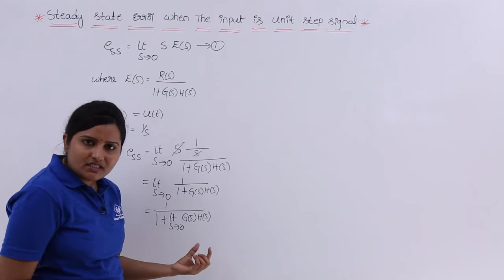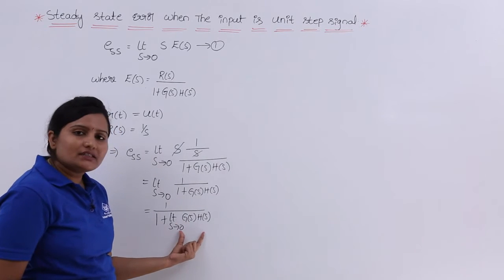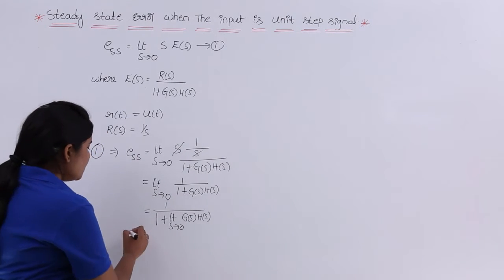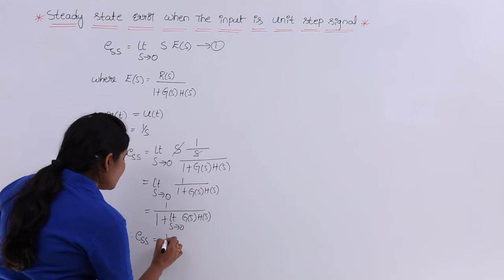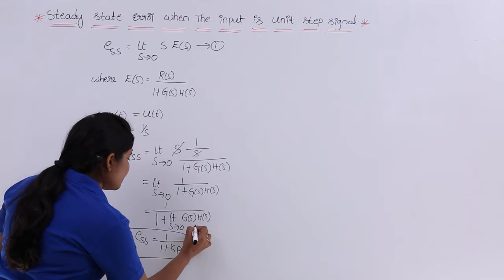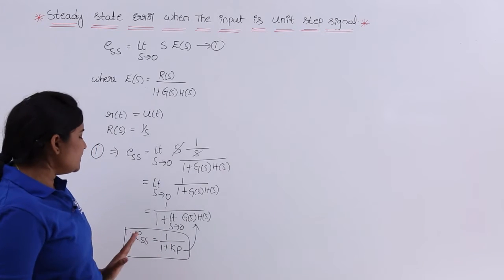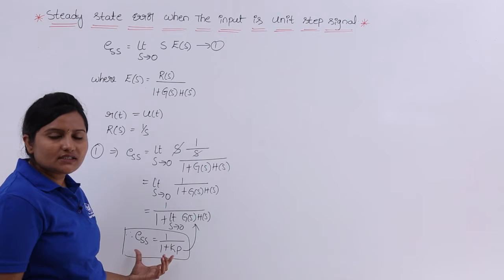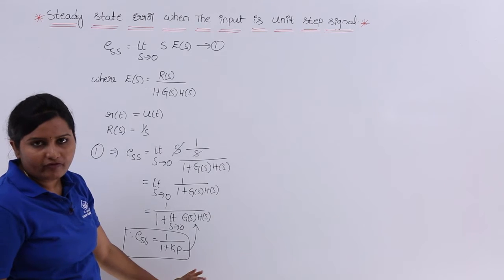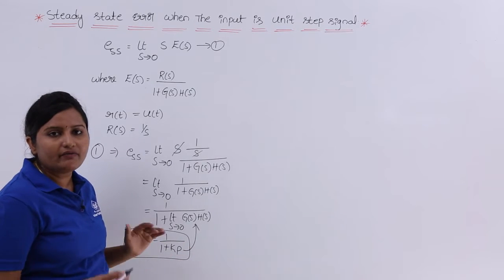From the previous video on static error constants, the term limit s→0 of G(s)·H(s) is equal to the position error constant Kp. Therefore, the steady state error is ESS = 1 / (1 + Kp), where Kp is the position error constant. This is the steady state error when we give a unit step signal as input.